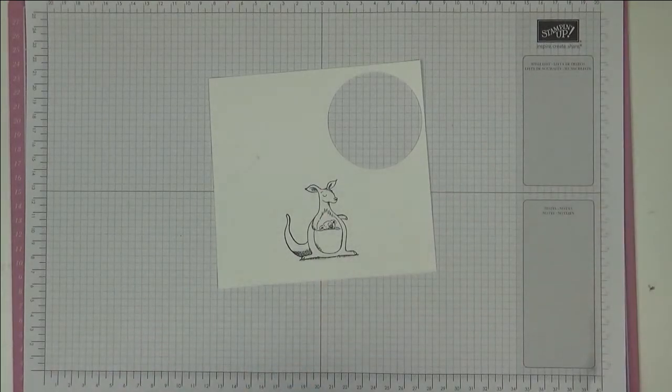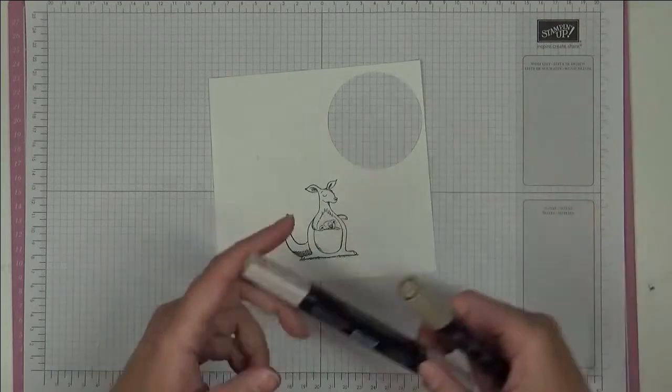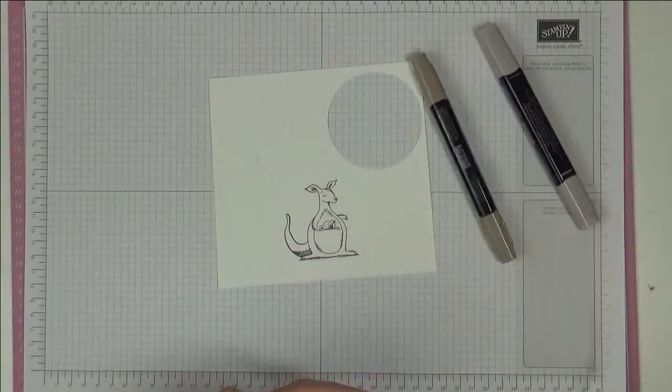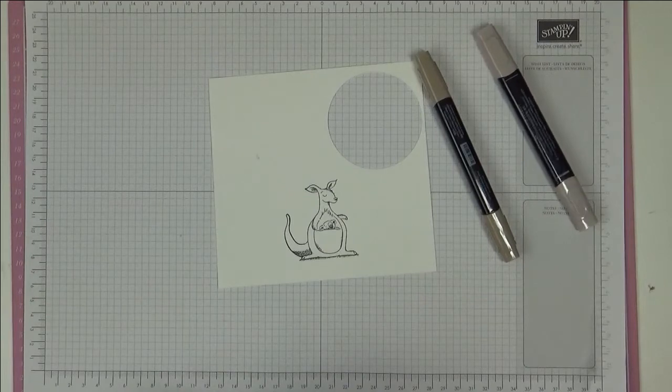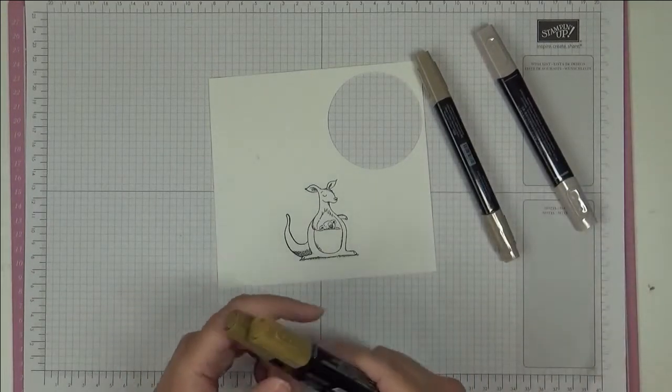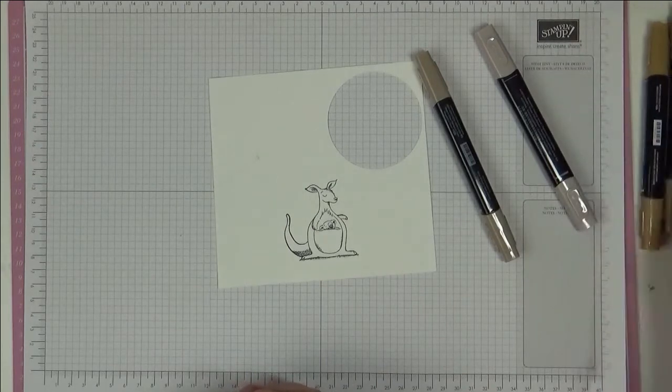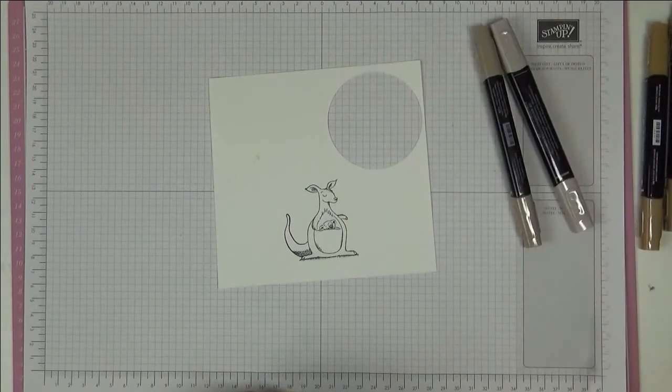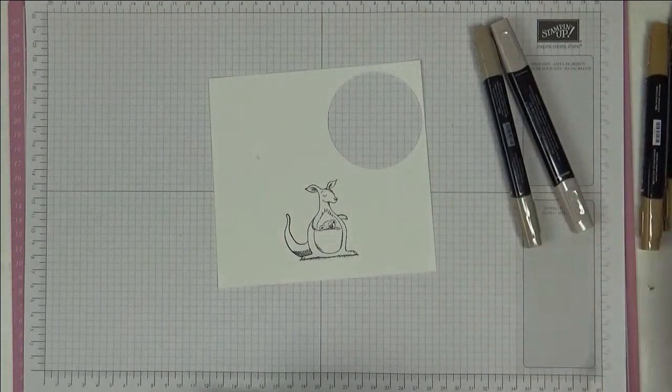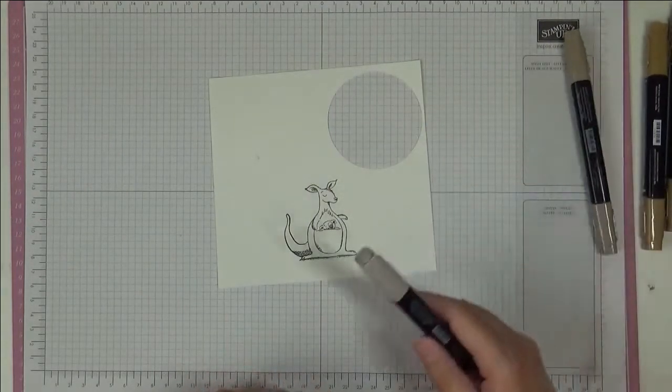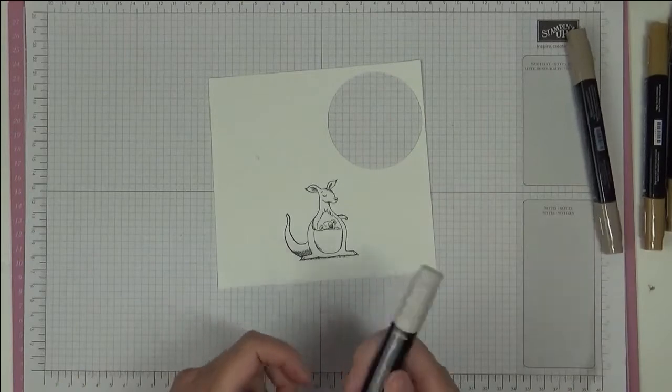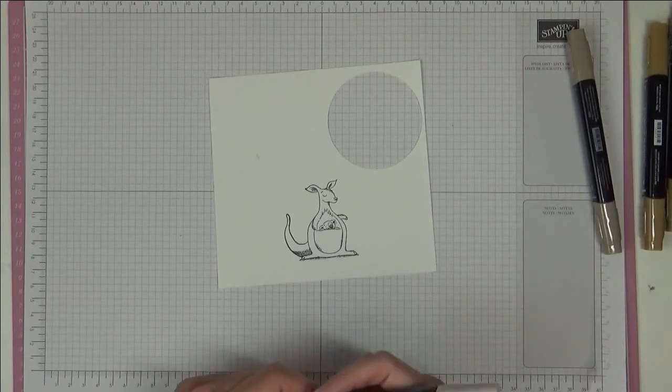And we're going to be coloring in and these are the markers I'm going to use initially. I've got the Crumb Cake Light and Dark. I've also got the Soft Suede Light and Dark though I might not use that at all. I don't know yet. And then I've got the Grey Granite Light and Dark and my Color Lifter. So I'm going to start coloring in and then I'll put you on fast forward with some music and I'll meet you at the end.